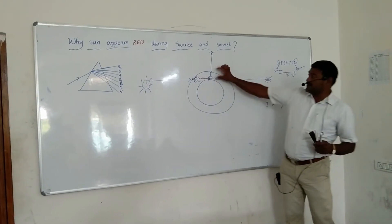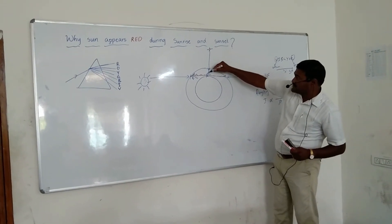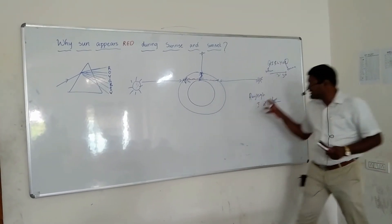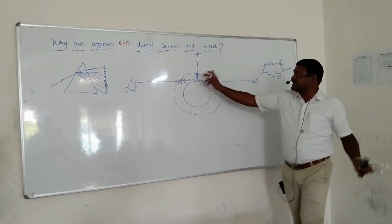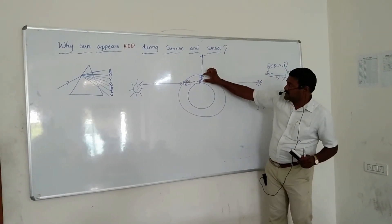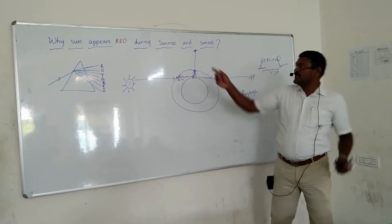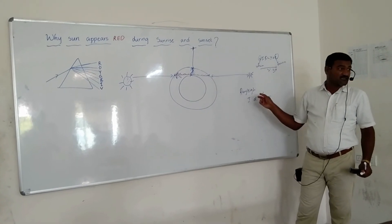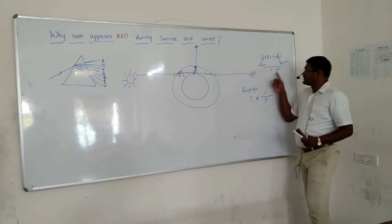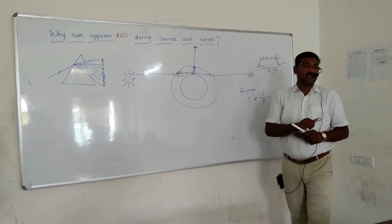But why is the sun not red during afternoon? Because during noon, the length of atmosphere through which sunlight passes is very less. So all the wavelengths undergo equal scattering, and it appears to be white. At sunrise and sunset, because the atmosphere is elliptical, there is more atmosphere at the horizon. So lower wavelengths scatter away, but red light undergoes least scattering and reaches the observer.